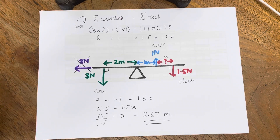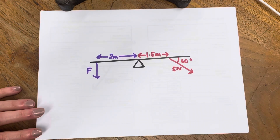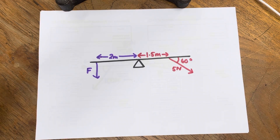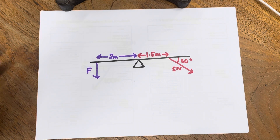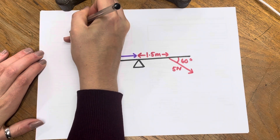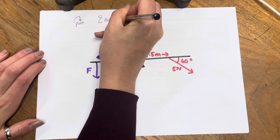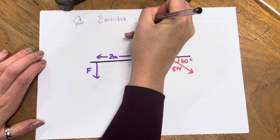So that is a standard moments problem, not in 2D. We're now going to move on to some 2D problems. If you want to, you can pause the video, have a go at the problem, and then listen to me explain it. Maybe you want to listen to me explain the first one, and then you'll pause for the next couple. So exactly the same thing is going to happen here — we're going to take moments around the pivot.